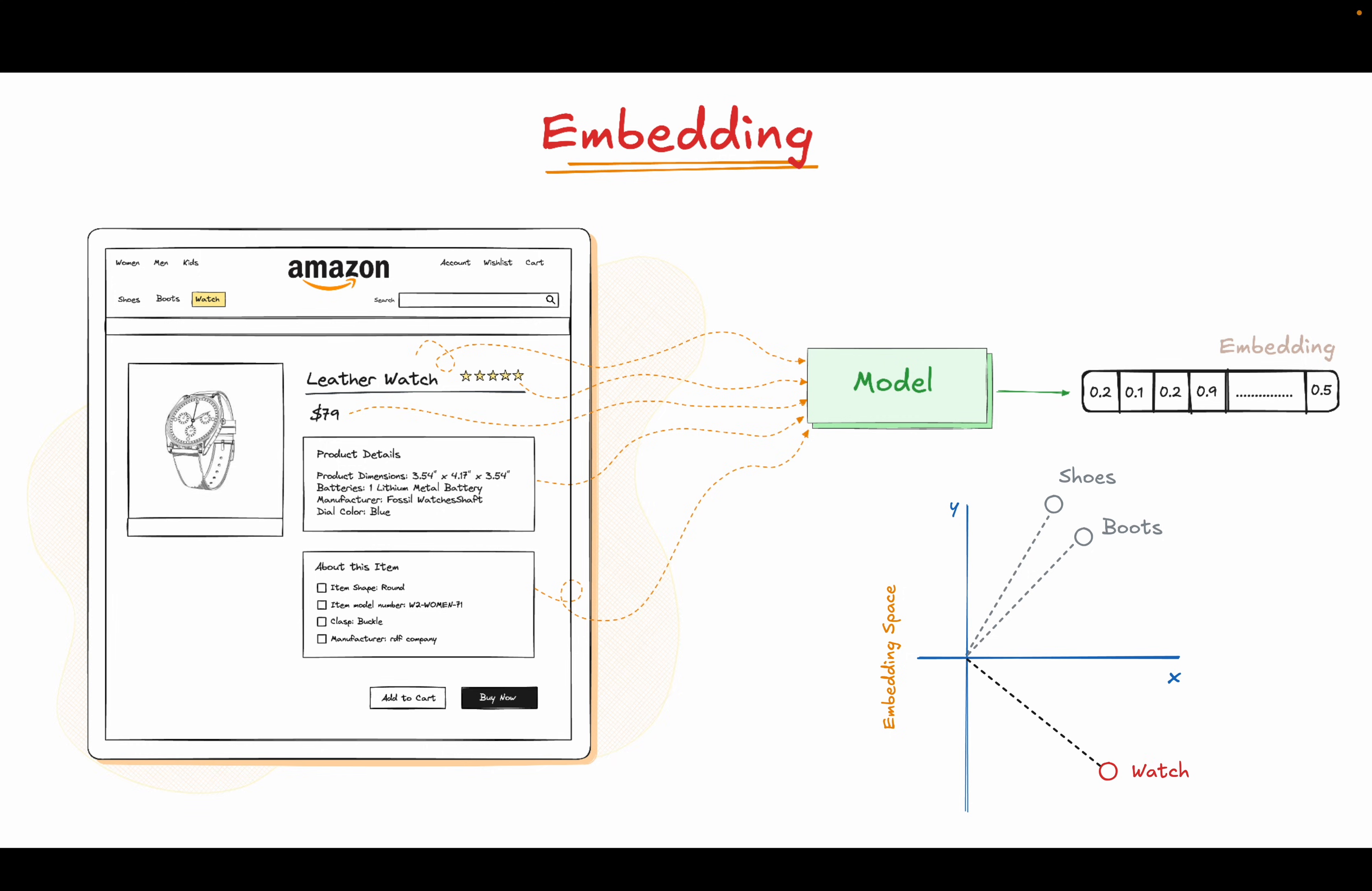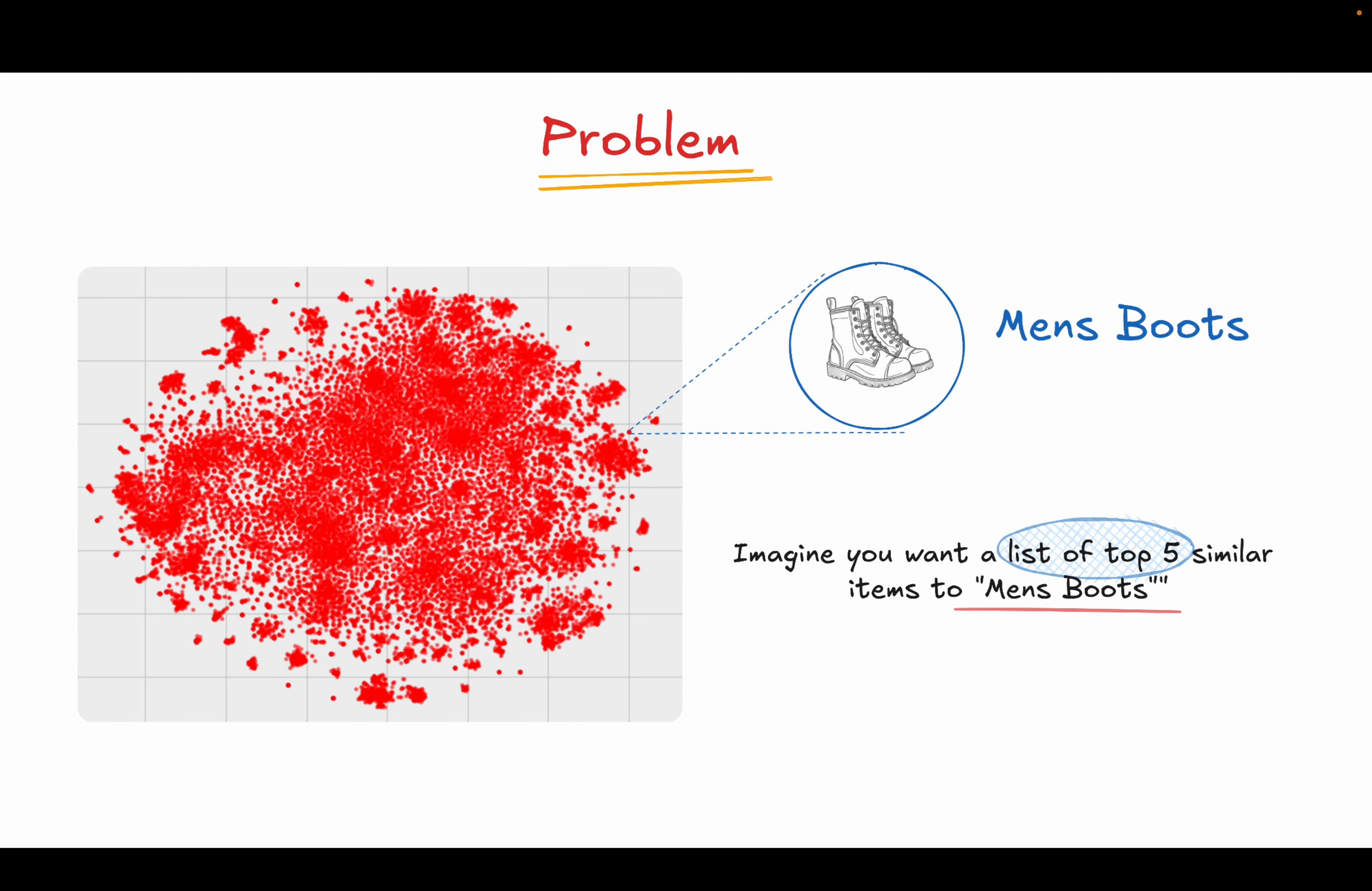So now that we have a better intuition of how embeddings work, let's come back to the problem. The problem was: how can we identify similar products to a given item? We have, say, men's boots, and we want to find ten similar items or five similar items to men's boots. The problem is: how can we search this entire data as efficiently as possible to get these five similar items?